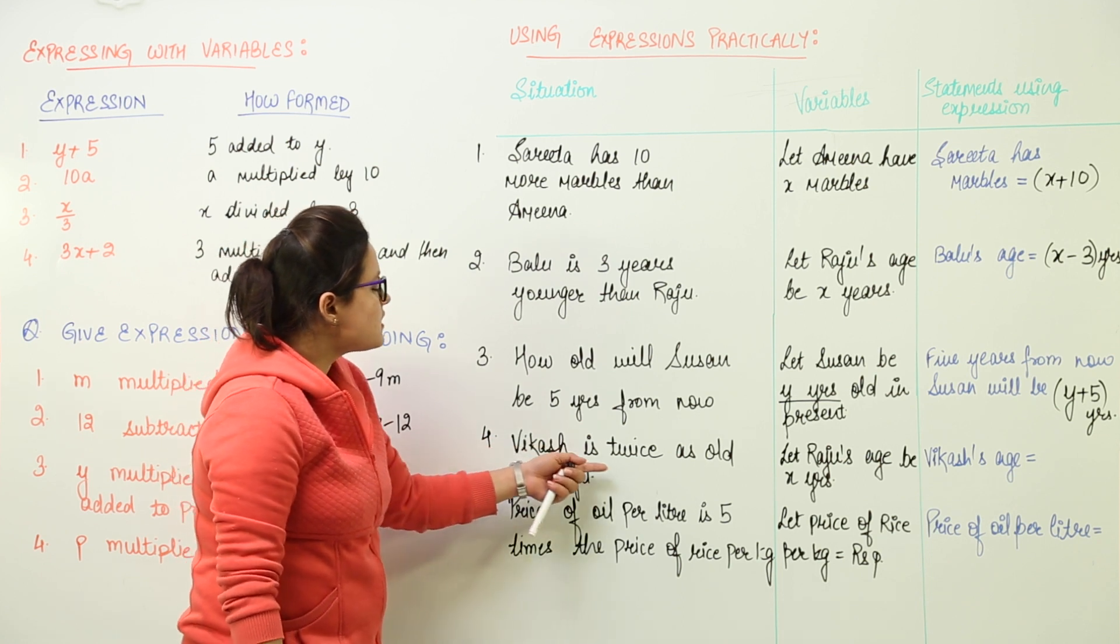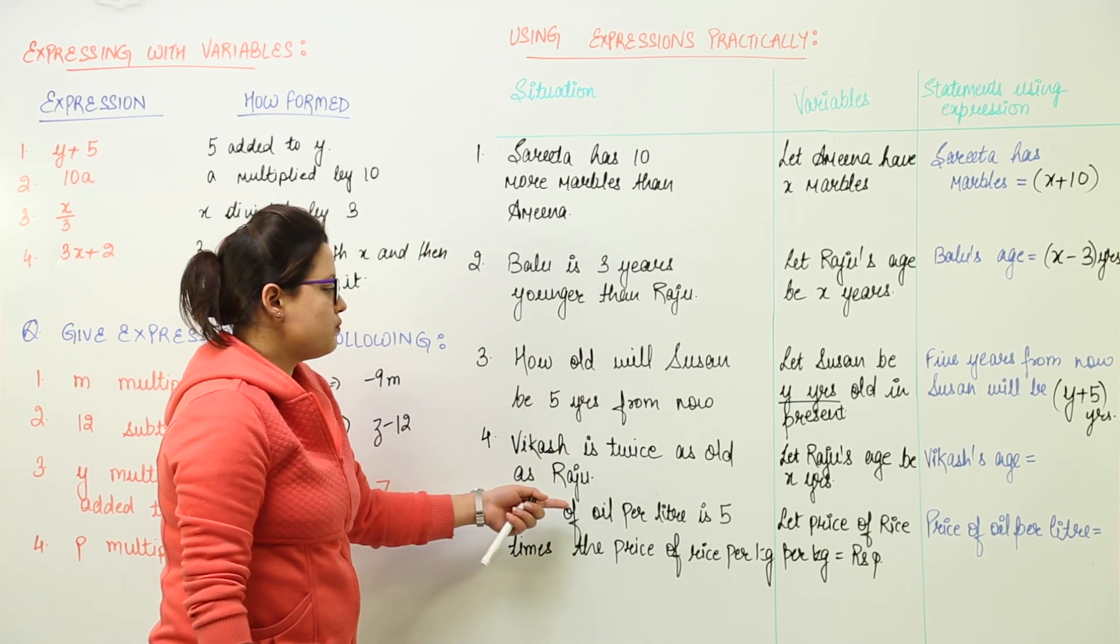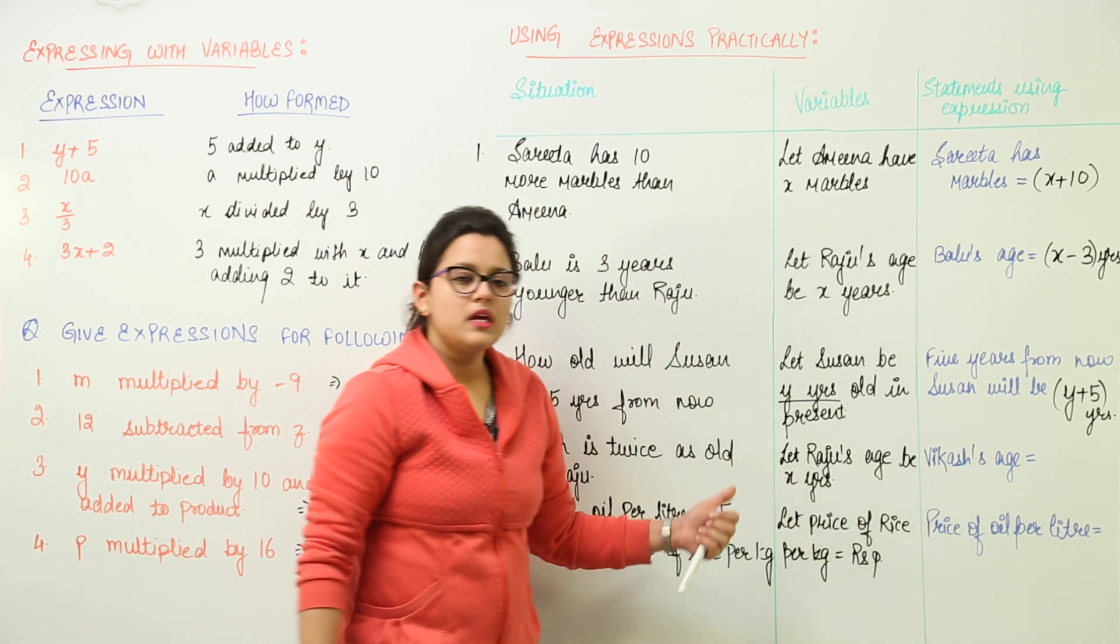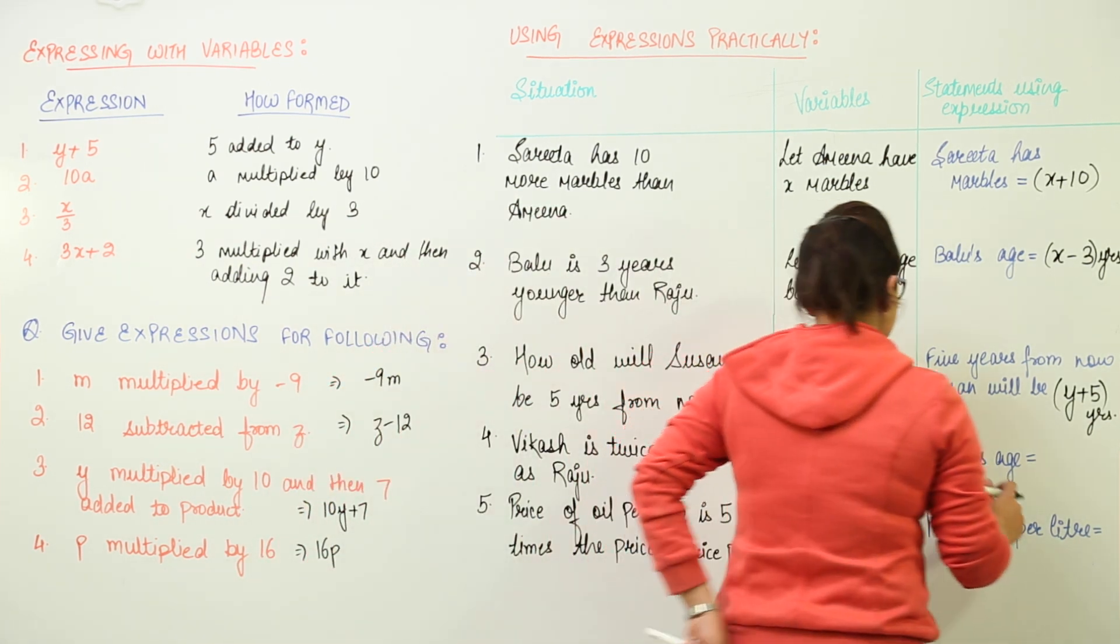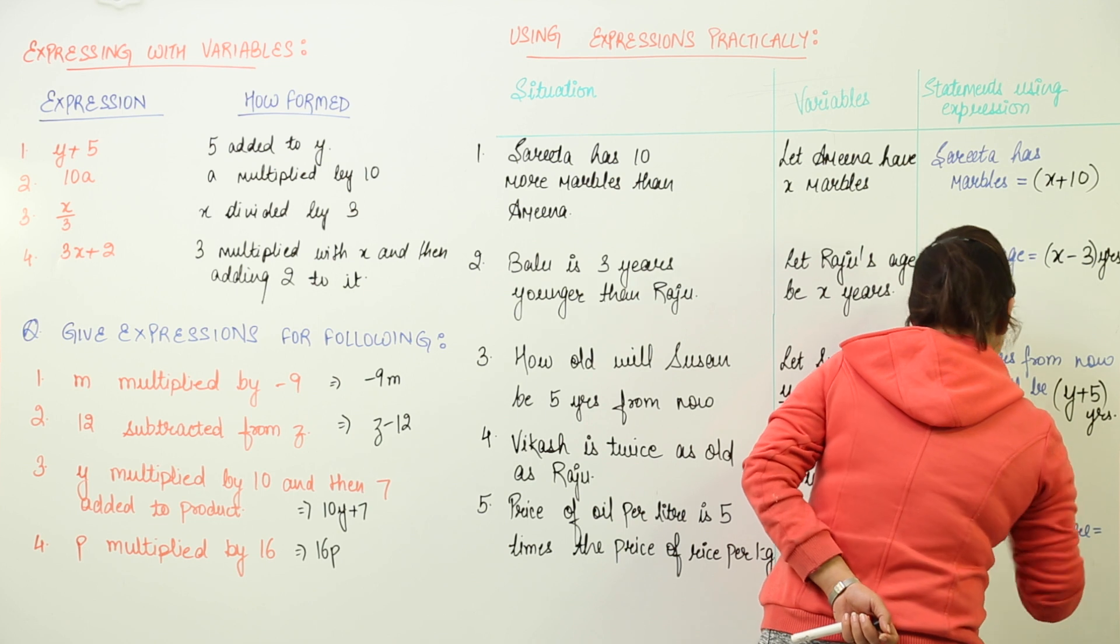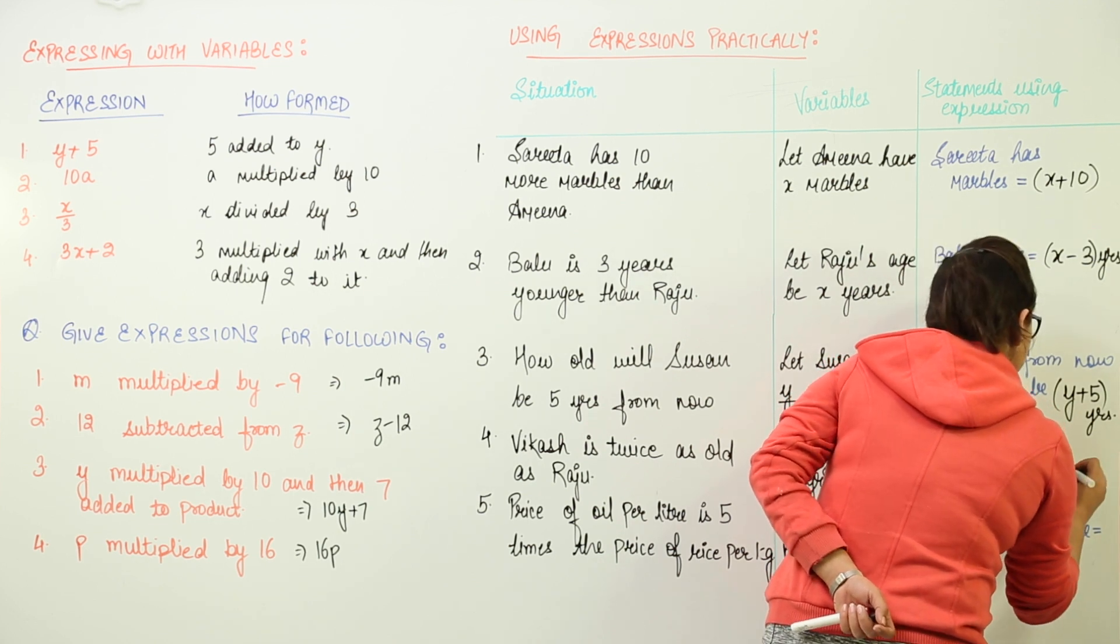Next is Vikas is twice as old as Raju. So we would assume Raju's age to be x years and twice as old as he means 2 times Raju's age, that is 2x. So Vikas's age would be 2x years.